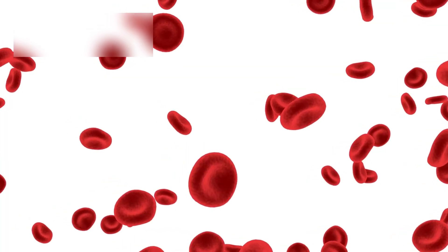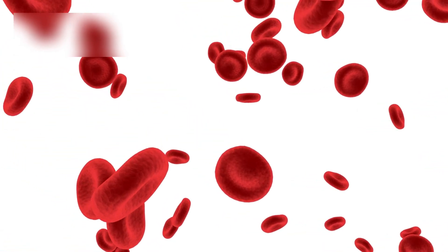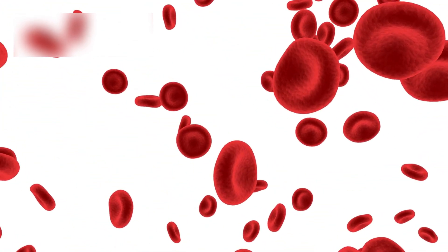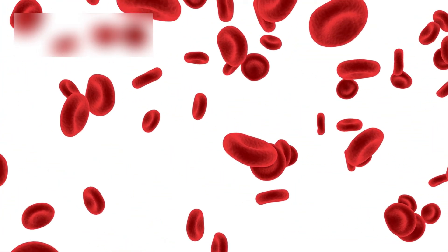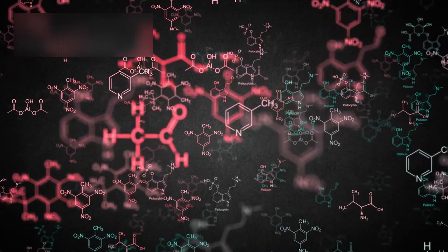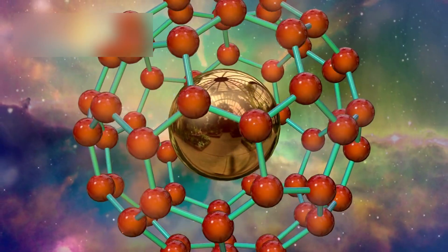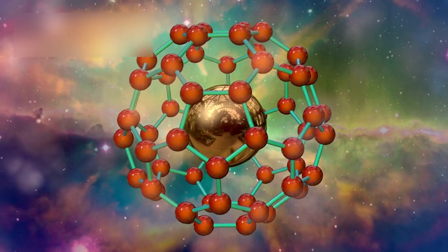These findings reshape how we think about the timeline of life's building blocks. Until recently, many scientists believed that chemical complexity, the kind that could one day lead to biology, was something that developed slowly, billions of years after the Big Bang. But Webb's observations suggest otherwise. They reveal that the universe began weaving the molecular tapestry of carbon-rich compounds far earlier than anticipated.